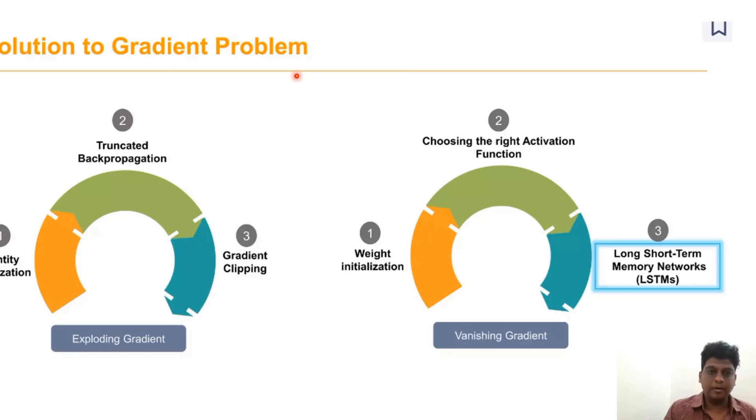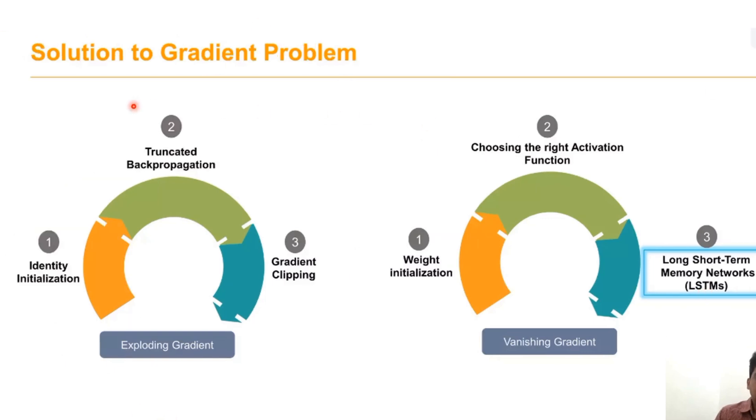The solution to this gradient problem is Long Short-Term Memory. To remove the exploding gradient problem, first identify initialization, then truncate the backpropagation concept, then apply gradient clipping.